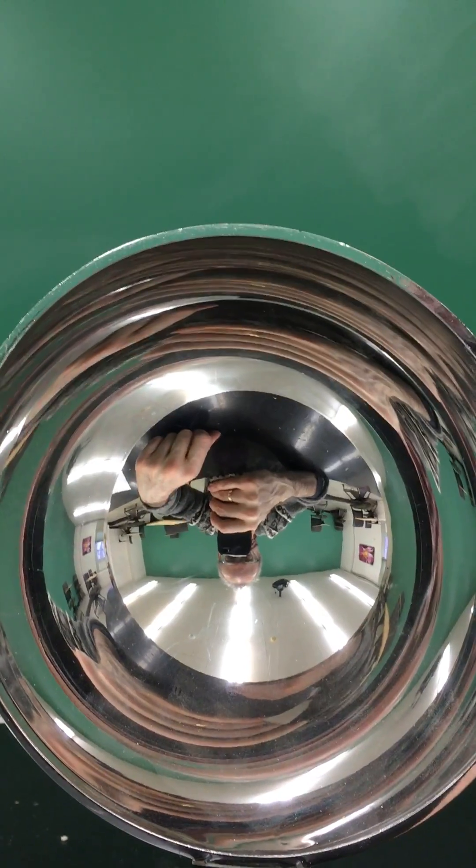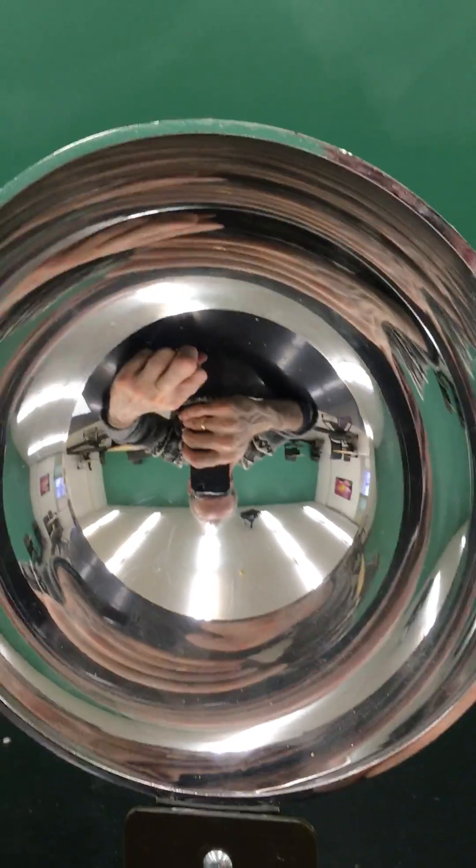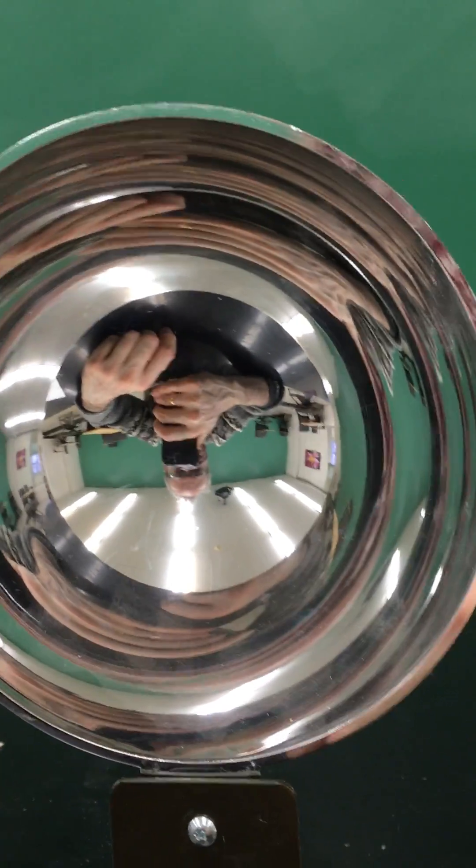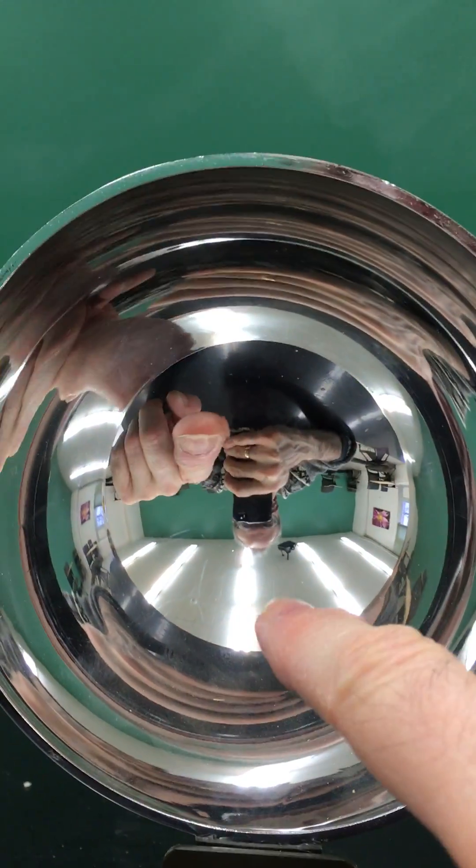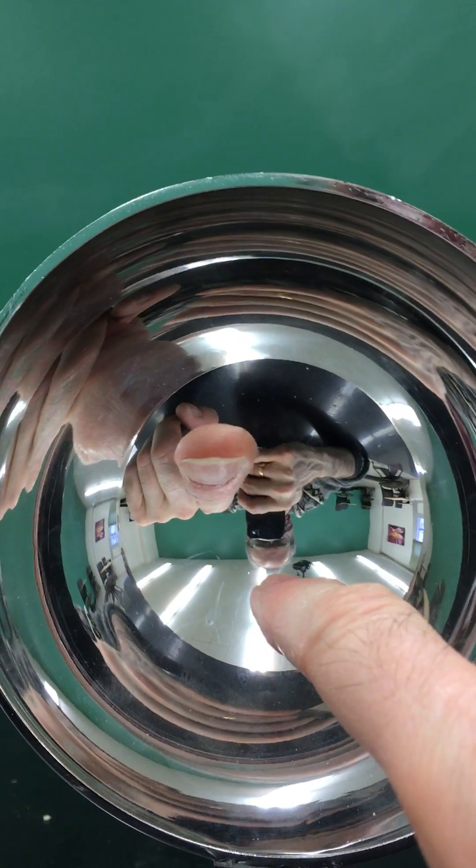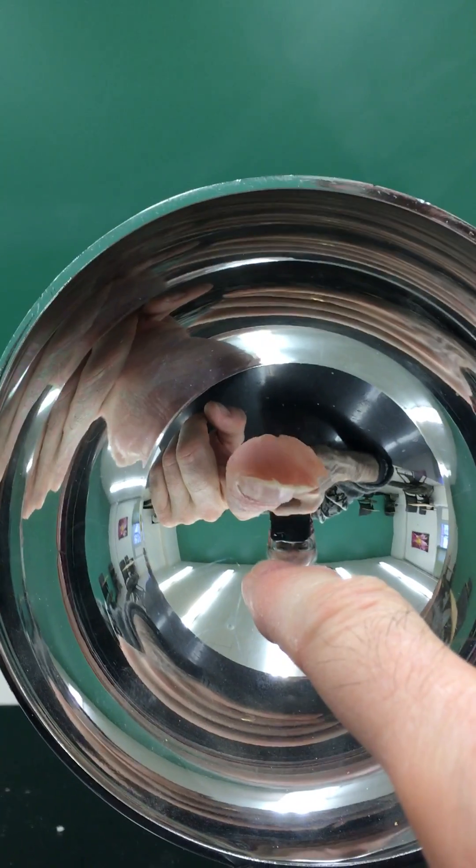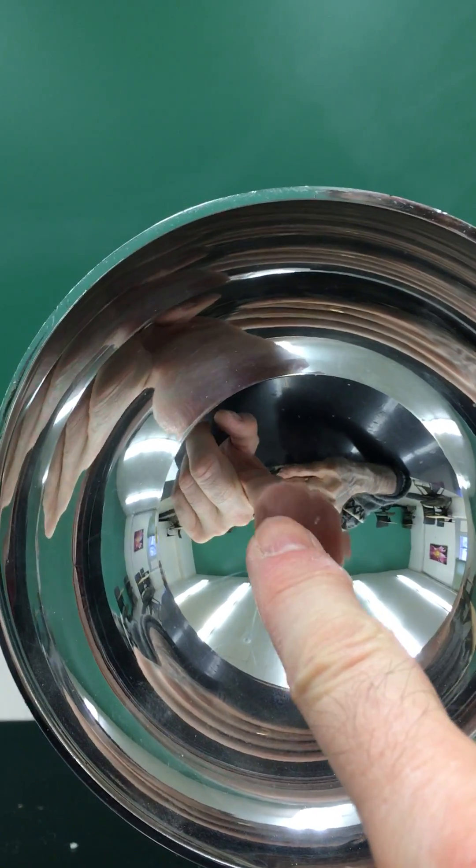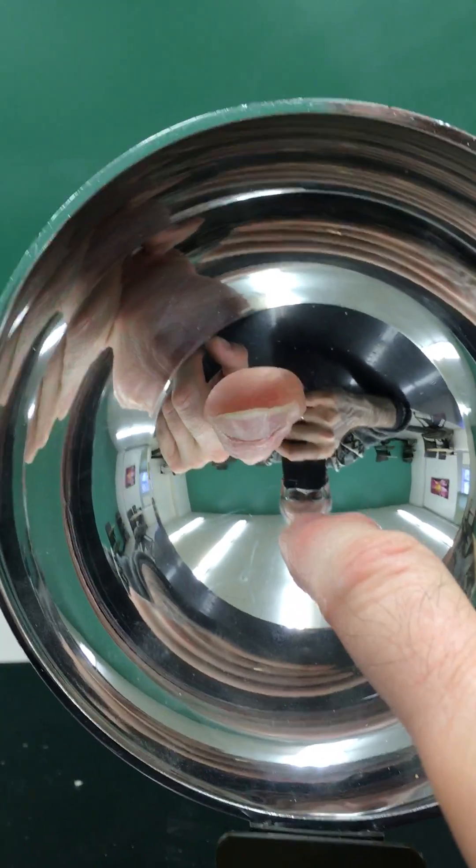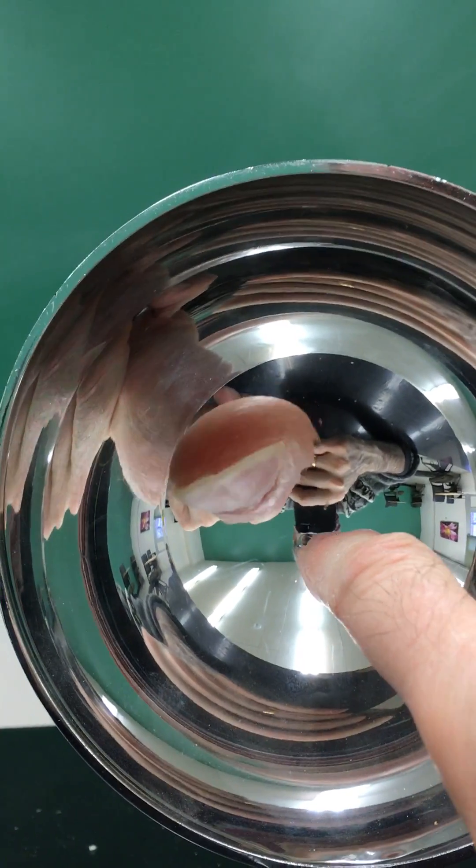And on the outside, we see stuff that's kind of distorted, very distorted, and in fact is right side up. Now, I'm going to take my finger here, and I'm going to bring it closer to the surface of the mirror. And you see that the finger is upside down. The fingernail in real life is on the top of the finger. The image has it on the bottom of the finger.